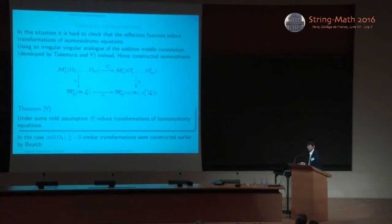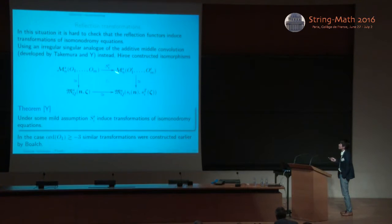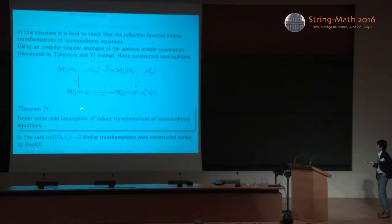So next, about reflections. So in this situation, it is hard to check the reflection functors of quiver varieties in these transformations of isomonodromy deformations. So using an irregular singular analog of the additive middle convolution, instead, Hiroe constructed such an isomorphism. So the change of parameters is the same as the reflection functors. But constructs such an isomorphism using the middle convolution instead of reflection functor. So then we can show that under some mild assumption, such an isomorphism induced transformation of isomonodromy deformations.